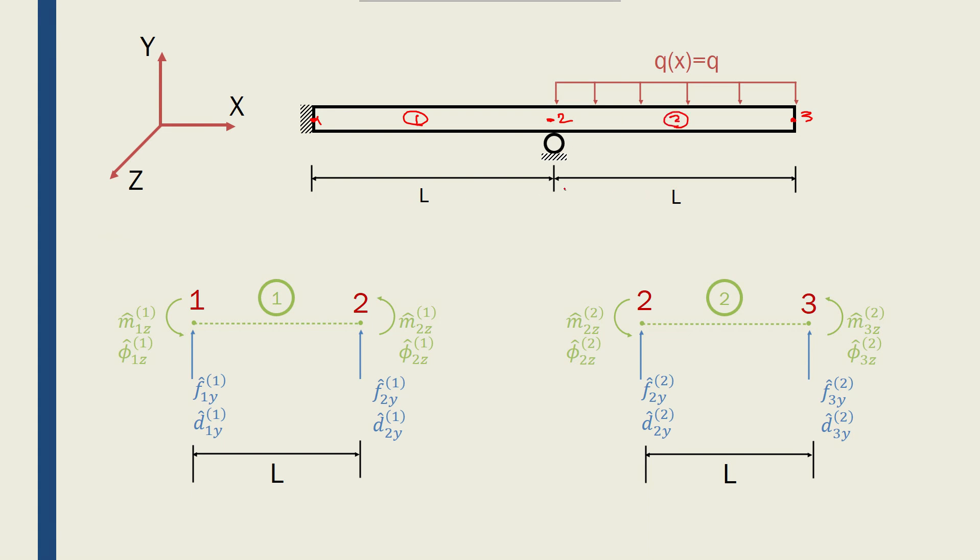Both elements have the same length, and we can consider constant E and I. Discretizing this beam into its elements gives element 1 with nodes 1 and 2, and element 2 with nodes 2 and 3. Node 2 is common between the two elements, with its forces and displacements.